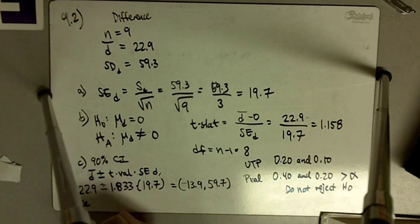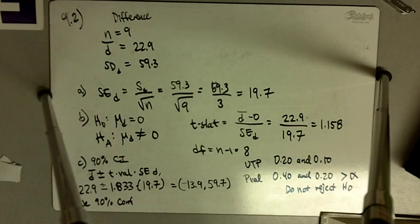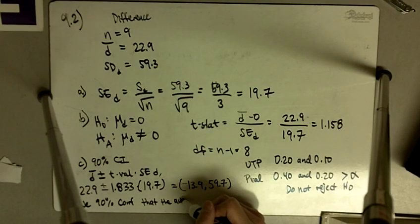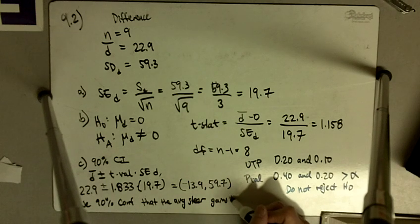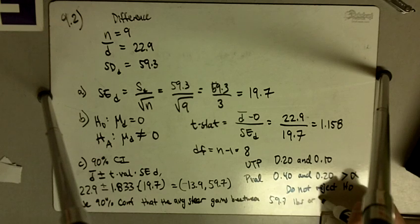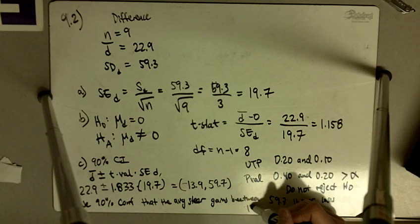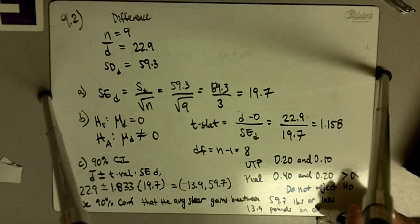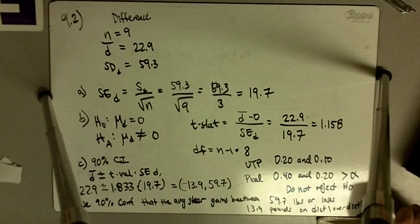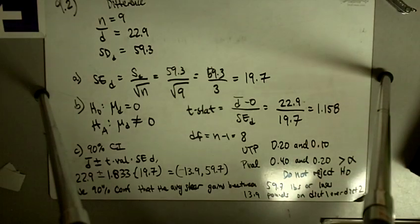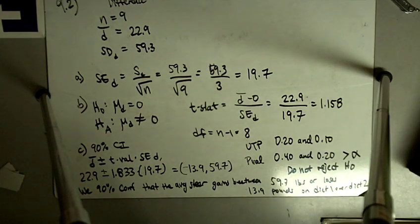So D says, an interpretation for the confidence interval says we are 90% confident that the average steer gains between 59.7 pounds or loses 13.9 pounds on diet one over diet two, on a 140-day measurement period. That's 9.2.